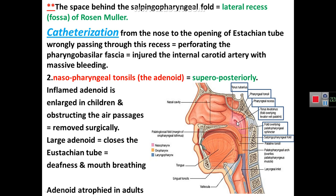Another feature of the nasopharynx is found not in the lateral wall but in the roof — a collection of lymphoid tissue called the pharyngeal tonsil or adenoid. The adenoid lies on the superior and posterior surface of the nasopharynx. Sometimes the adenoid becomes inflamed and infected, especially in children, causing it to hypertrophy and increase in size.